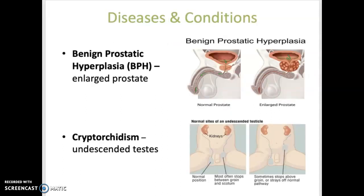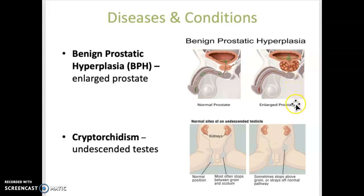Other diseases and conditions are listed on the next few slides. Benign prostatic hyperplasia is shown here — this is enlargement of the prostate gland, which you can see clearly on this picture. This is often due to aging, and what ends up happening is it constricts the urethra, which passes right through the prostate gland, and that can restrict the flow of urine.